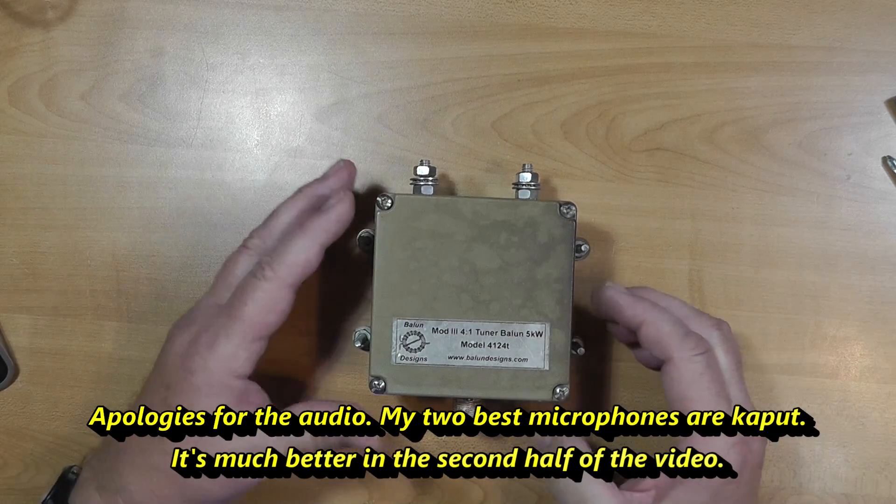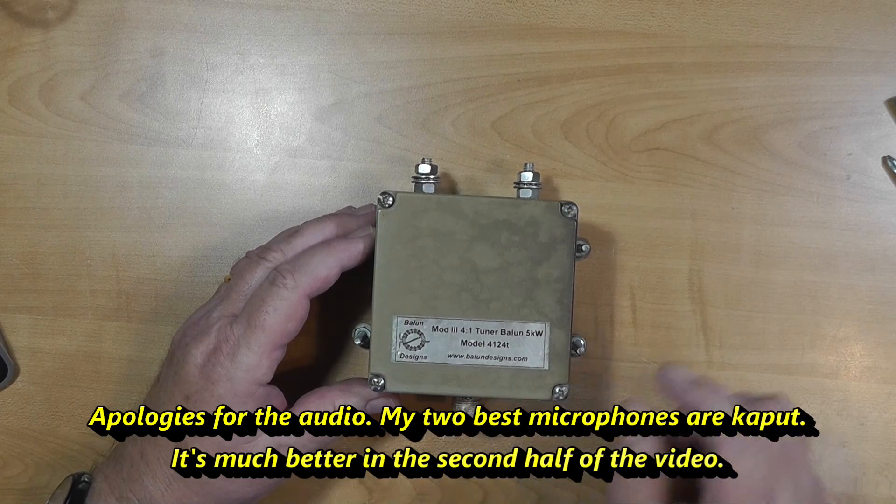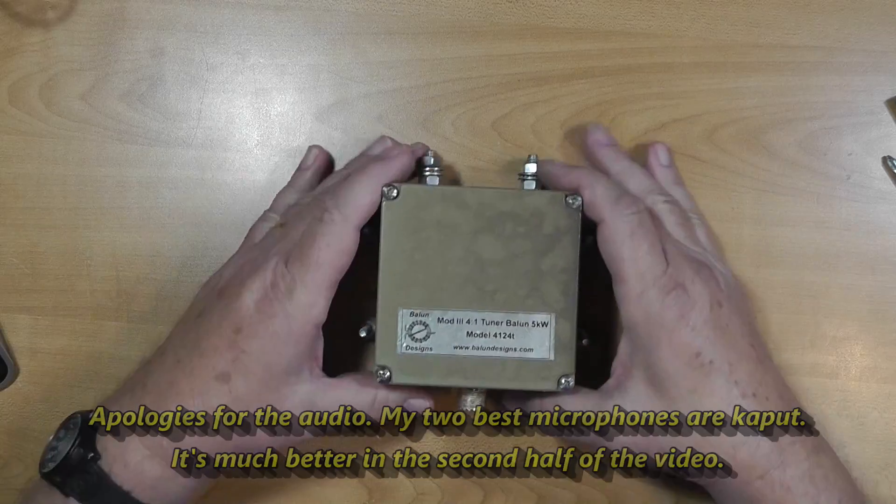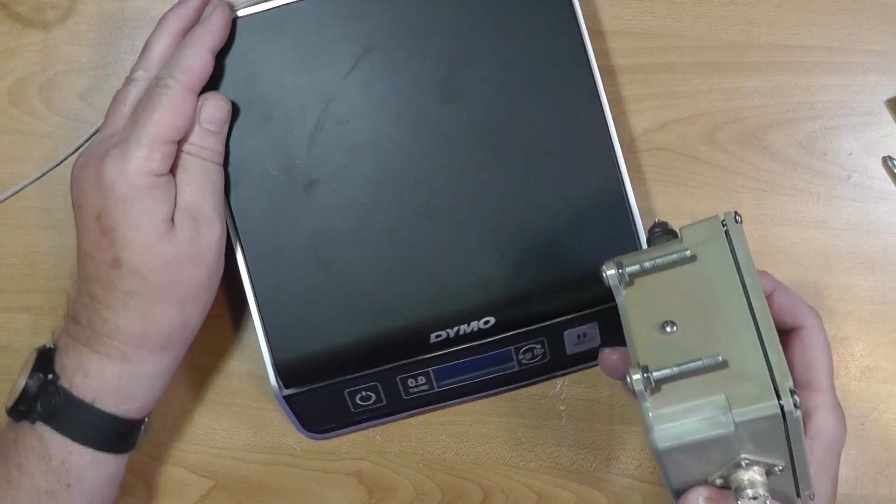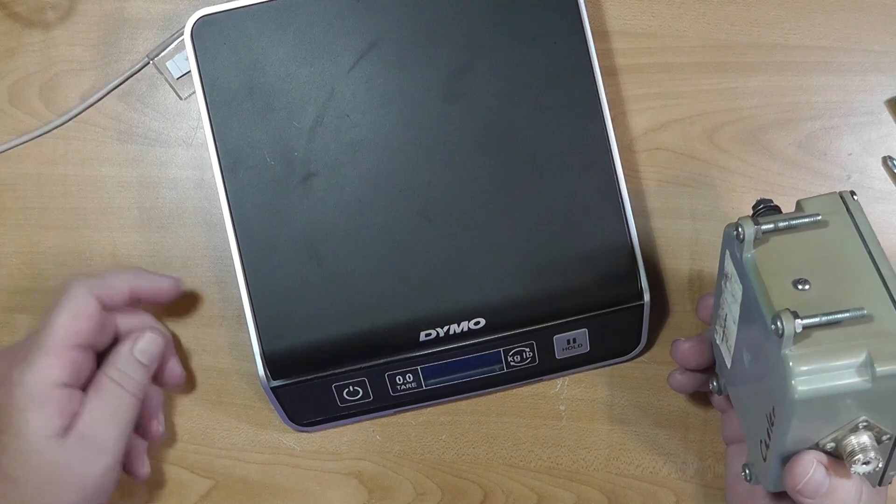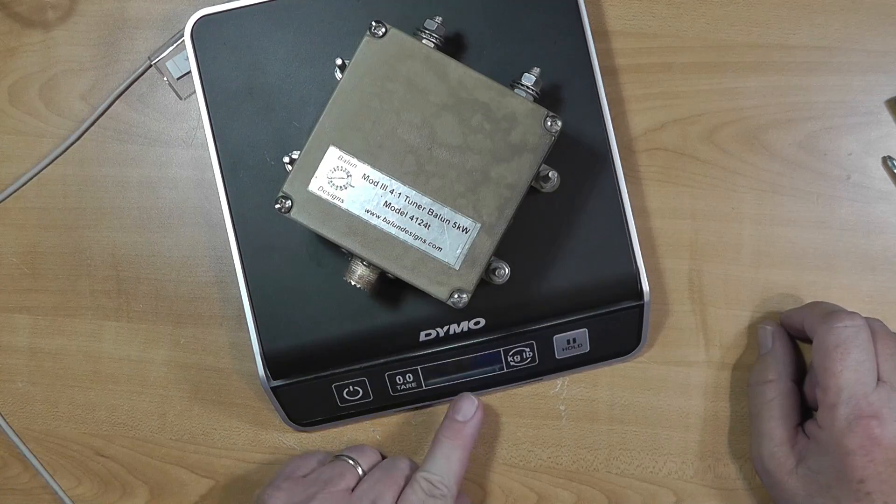We're going to take a look at it. It's BalunDesigns.com. Now, first of all, this thing is hefty, so let's just put this on the scale right here. Turn on the scale, put this thing on, and we come up with one pound and 10.8 ounces. That's about one pound, 12 ounces, or one and three quarters pounds. So it's pretty heavy.